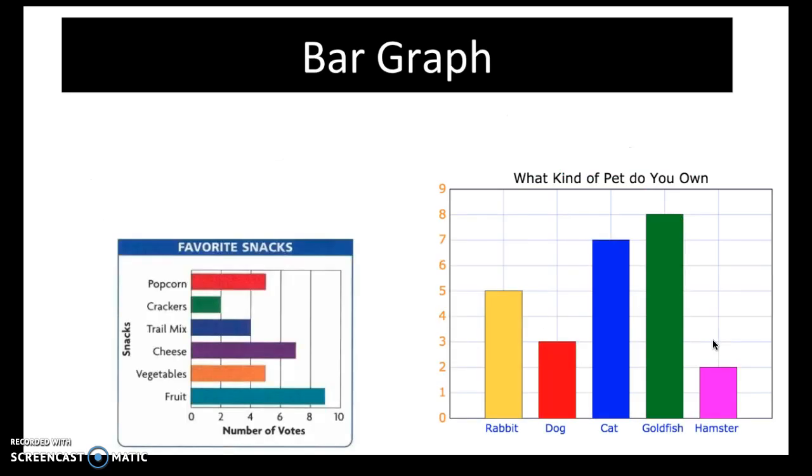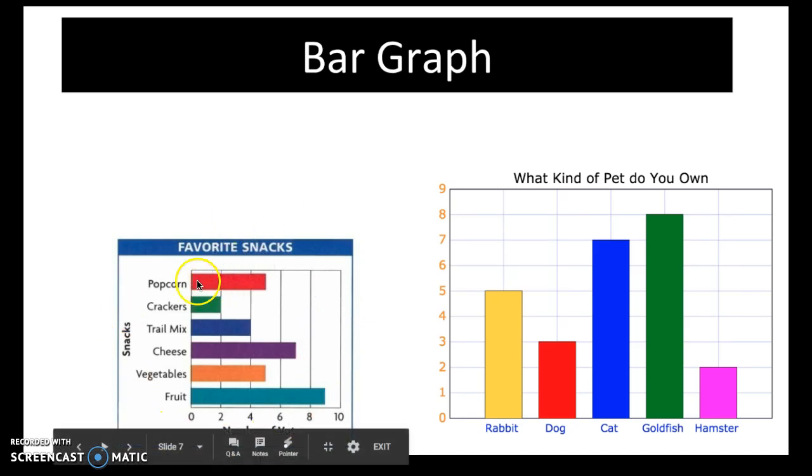The next type is a bar graph. There are two bar graphs shown here. The one on the left is a horizontal bar graph because the bars are going in a horizontal fashion. The one on the right is a vertical bar graph because the bars are going in a vertical fashion.